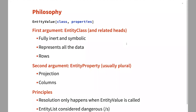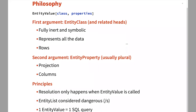These two things form the underlying algebraic structure of relational algebra, exposed in a way that's slightly different in an entity relational model. The principle is: before you call EntityValue, anything is inert and symbolic. You can do metaprogramming with it, construct it like Lego blocks, and only when you call EntityValue do things happen.